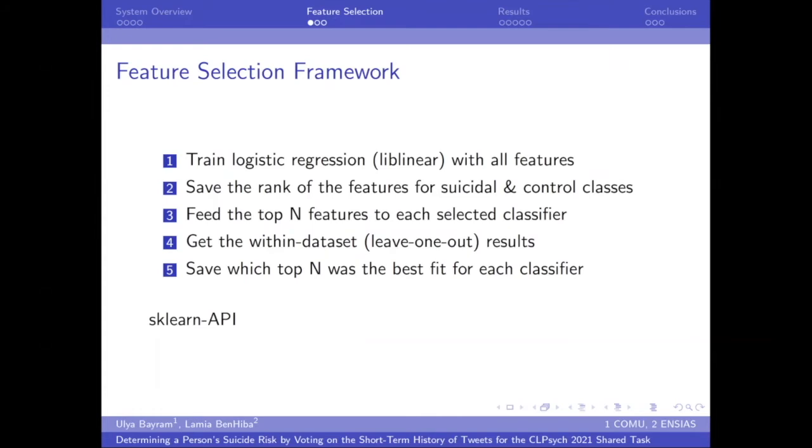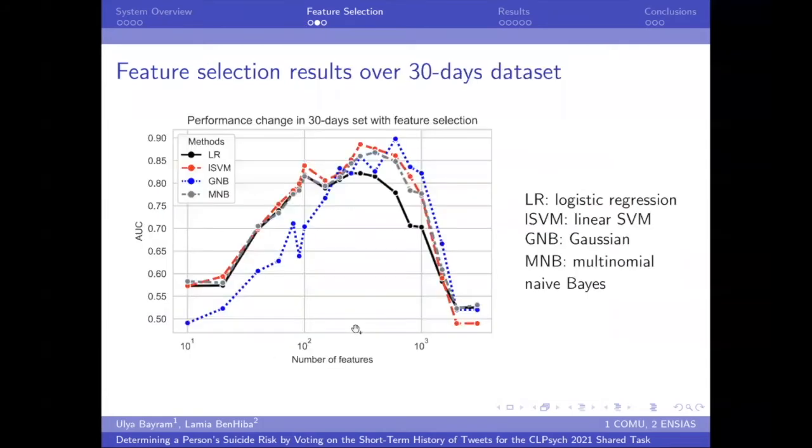So we train a logistic regression with linear classifiers using all features. And then we save the rank of the features for suicidal and control classes. And then we feed the top N features to each selected classifier, get the within-dataset leave-one-out results, and save which top N was the best fit for each classifier. And leave-one-out means one person. We left one person at every time and all tweets of that person in order to have a fair classification result within dataset evaluations.